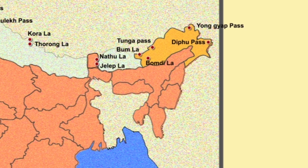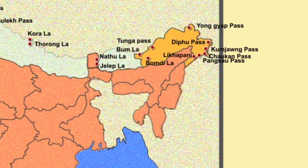Other passes in Arunachal Pradesh are Kwamjang Pass, Chankan Pass, Likh Pani Pass, and Pansau Pass.